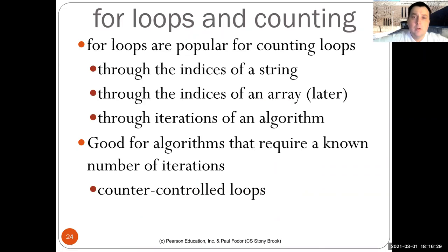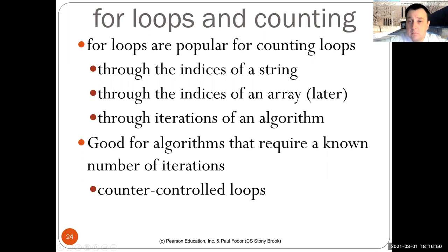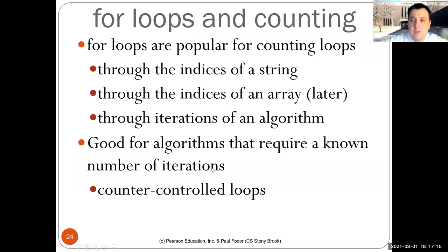For loops are extremely popular for counting through the indices in a string. Remember that a string has characters, and we can iterate with an index from zero to the length of the string minus one and collect every character. Later we'll see that we can iterate through the indices in an array. We can also iterate through an algorithm — for instance, to print the characters of a string in reverse order, we need a loop that iterates from the end of the string to the beginning, collecting characters one by one. For loops are good for algorithms that require a known number of iterations — these are called counter-controlled loops.